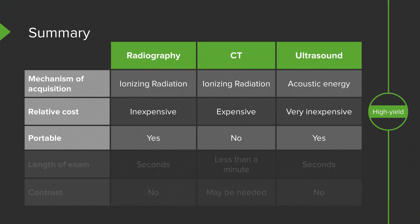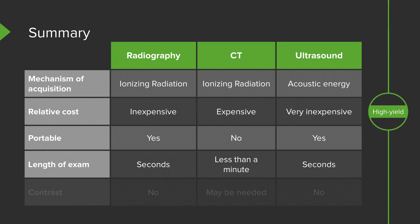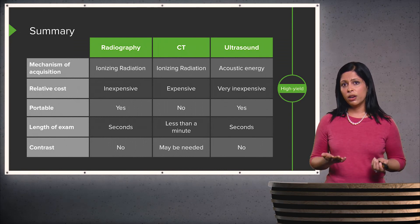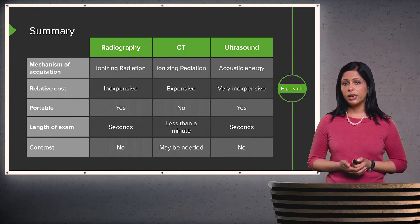Both radiography and ultrasound can be performed portably, however CT cannot and comes with a very large machine. Radiography can take just a few seconds, CT takes less than a minute but is longer than a radiograph, and ultrasound can also take just a few seconds but is very operator dependent — whoever is performing it can take as long as needed to evaluate the area of interest. Radiography and ultrasound do not use any contrast, while CT may or may not use contrast depending on the area being evaluated.